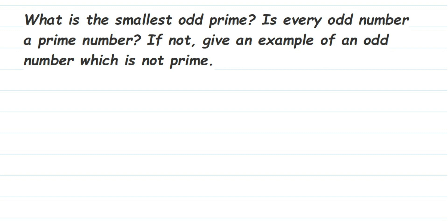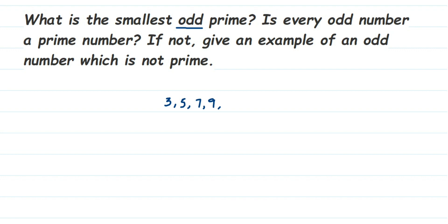Here is a question on prime numbers: What is the smallest odd prime number? Is every odd number a prime number? If not, give an example of an odd number which is not prime. First, let's address the smallest odd prime number. Odd numbers are those not divisible by two, or numbers that end with digits 1, 3, 5, 7, or 9.